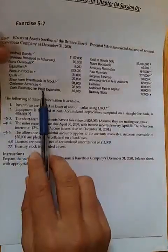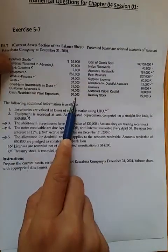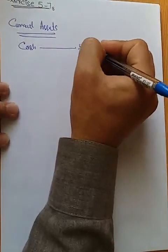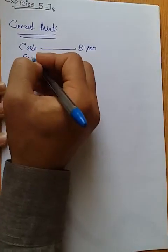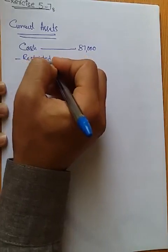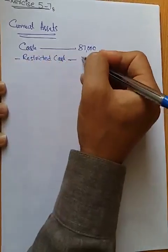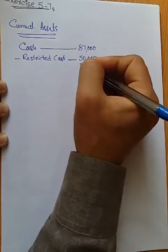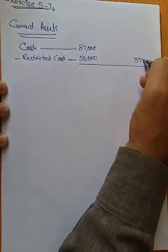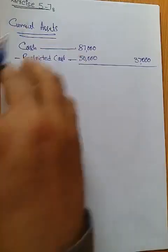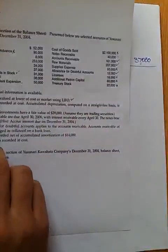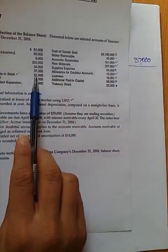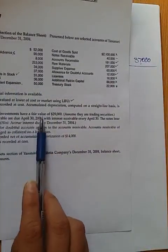The cash we have is $37,000, but there is also cash restricted for plant expansion of $50,000. We have $87,000 total cash, but $50,000 of it is restricted and cannot be used due to plant expansion. So the cash that we have and can use immediately is $37,000. That is the adjustment for cash.